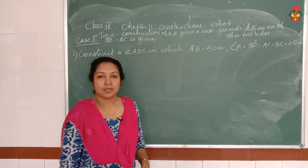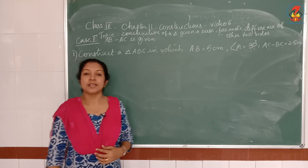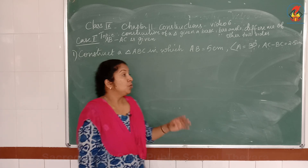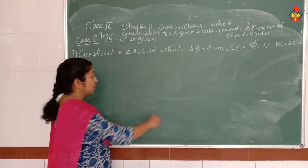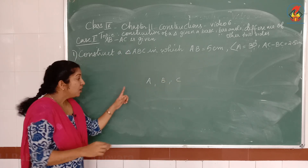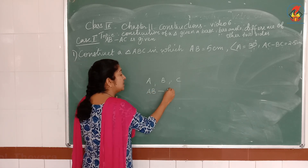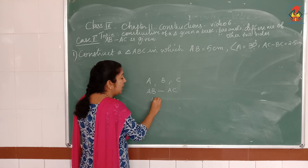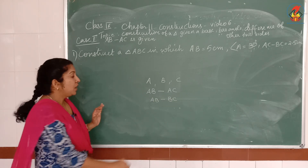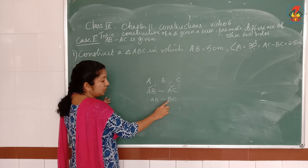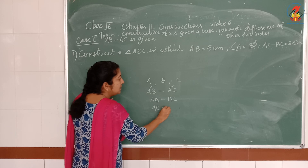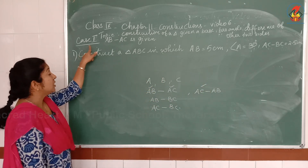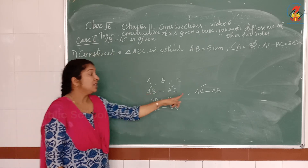Chapter 11 Constructions, video 6. The topic is construction of a triangle given its base, base angle, and difference of the other two sides. For 3 vertices ABC: if A is common it is AB minus AC; if B is common it is AB minus BC; if C is common it is AC minus BC. The other case is AC minus AB. The first case is AB minus AC, the second case is AC minus AB.